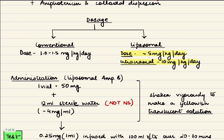Coming to dosage, if using liposomal Amphotericin B, the dose is around 5 mg per kg per day. However, if there is intracranial involvement, the dose is doubled to 10 mg per kg per day. In case of conventional Amphotericin B, the dose is 1 to 1.5 mg per kg per day.